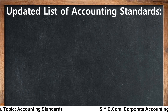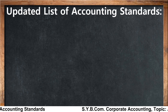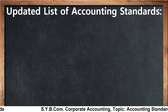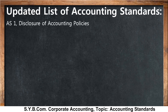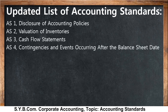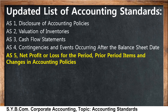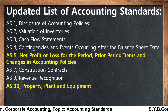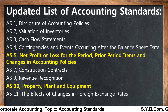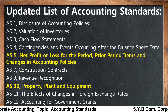Here is the updated list of 29 accounting standards, published on 1st April 2019 on the ICAI website. AS1: Disclosure of Accounting Policy. AS2: Valuation of Inventory. AS3: Cash Flow Statement. AS4: Contingencies and Events Occurring After the Balance Sheet Date. AS5: Net Profit or Loss for the Period, Prior Period Items and Changes in Accounting Policies. AS7: Construction Contracts. AS9: Revenue Recognition. AS10: Property, Plant and Equipment. AS11: The Effect of Changes in Foreign Exchange Rates. AS12: Accounting for Government Grants.